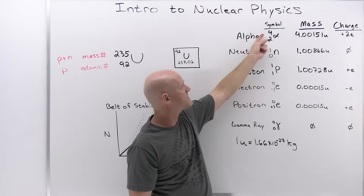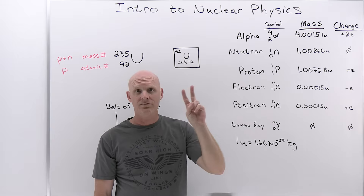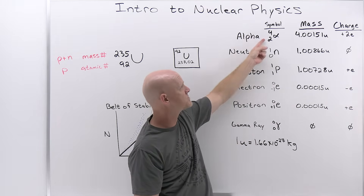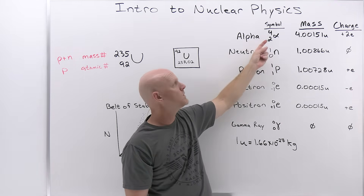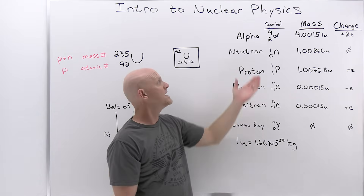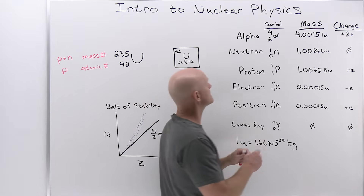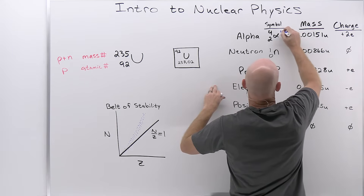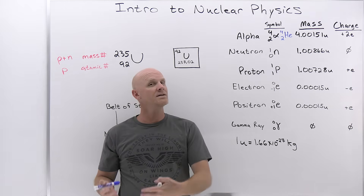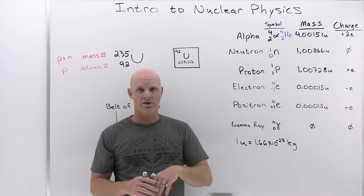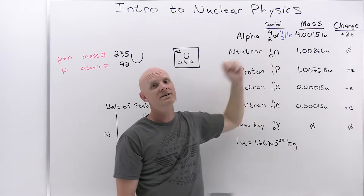The alpha particle has a mass number of 4, meaning 4 total protons and neutrons combined, and an atomic number of 2, meaning 2 protons. Subtracting, 4 minus 2, gives 2 neutrons. So an alpha particle has 2 protons and 2 neutrons. It's also sometimes written as helium-4, because it is the same thing as a helium nucleus — not a helium atom, since it has no electrons, just the equivalent of the helium nucleus. Whether you see it written with the alpha symbol or the helium symbol, it means the same thing.